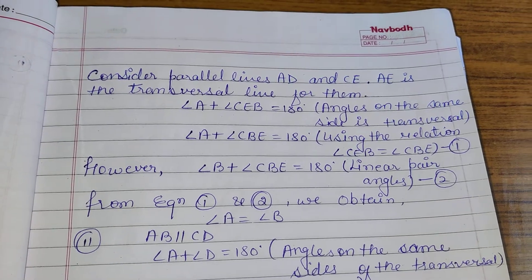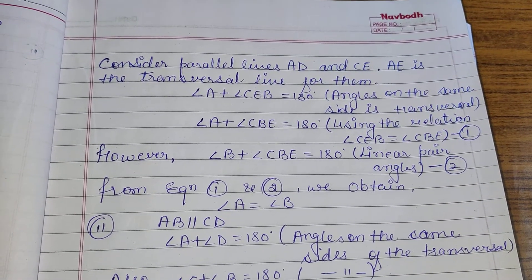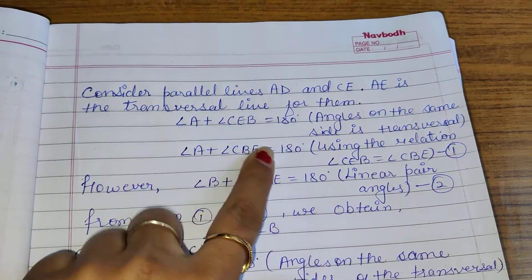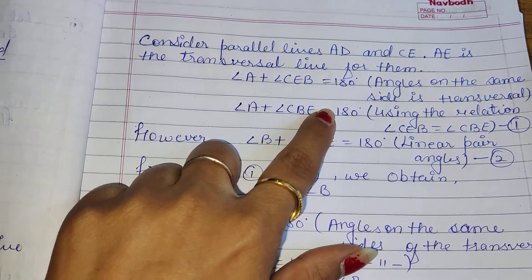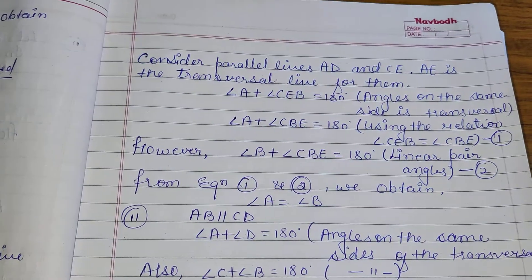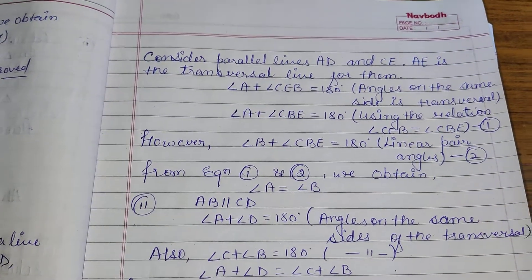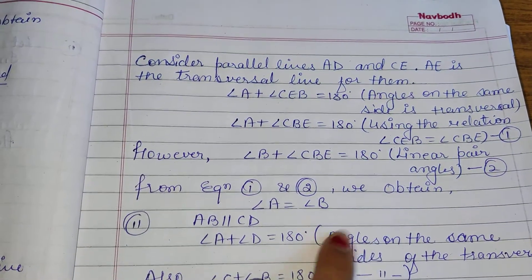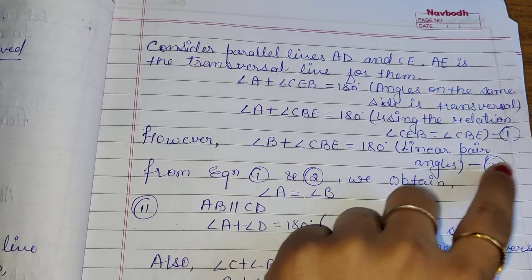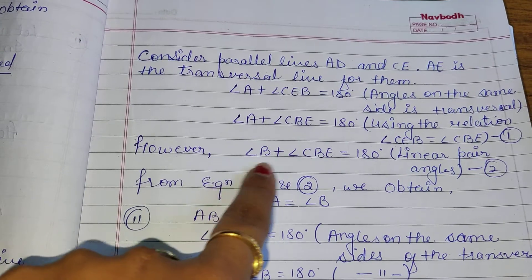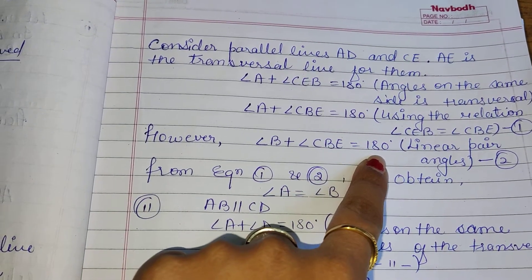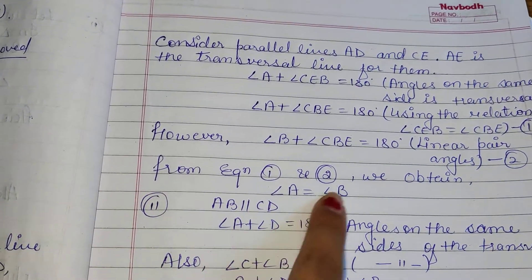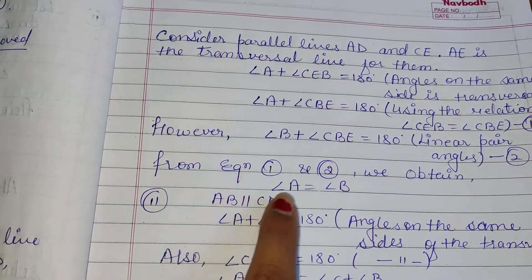Then we consider parallel lines AD and CE with AB as a transversal. So we can write angle A plus angle CEB equals 180 degrees — angles on the same side of the transversal. We can also write angle A plus angle CBE equals 180 degrees using the relation angle CEB equals angle CBE. This gives equation 1. However, angle B plus angle CBE equals 180 degrees — it is a linear pair. This gives equation 2. From equations 1 and 2 we obtain angle A is equal to angle B.